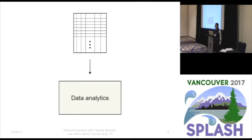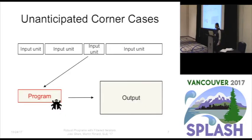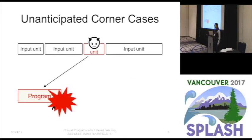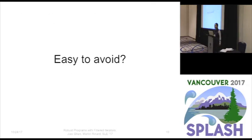Unfortunately, programs have bugs. A program may enter unanticipated corner cases if there's an unanticipated input unit. As a result, the program may crash and produce no output. Some of you may think that this situation is easy to avoid, but is that true?